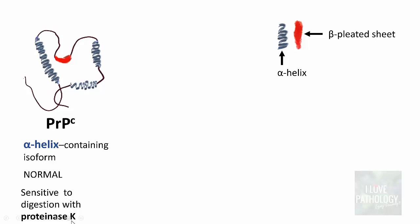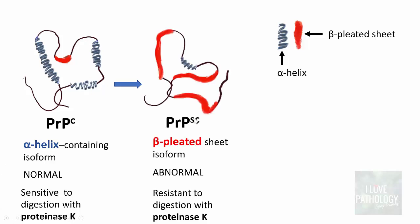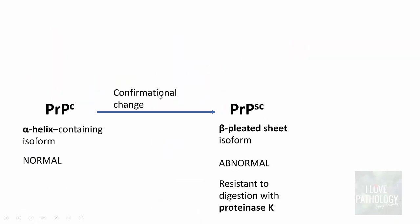Due to some conformational change, the normal PRPC gets converted to an abnormal form called PRPSC — SC stands for scrapie. In this scrapie form, the predominant component is the beta-pleated sheet isoform. A key characteristic of this abnormal form is that it is resistant to digestion with proteinase K, unlike the normal cellular form.